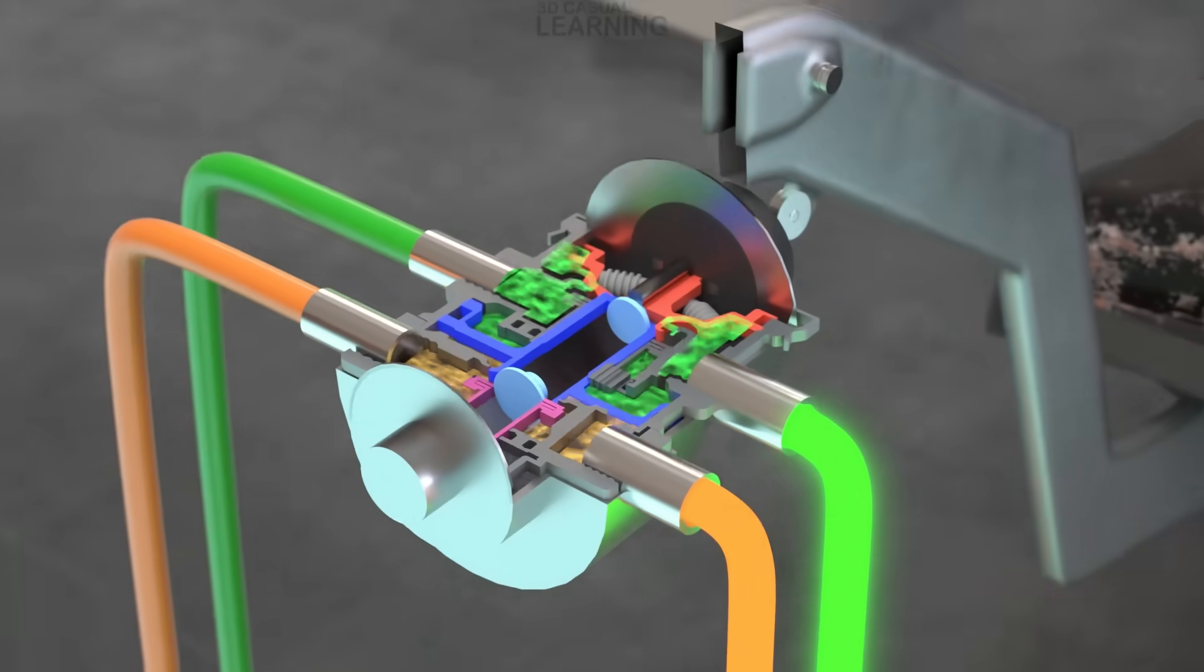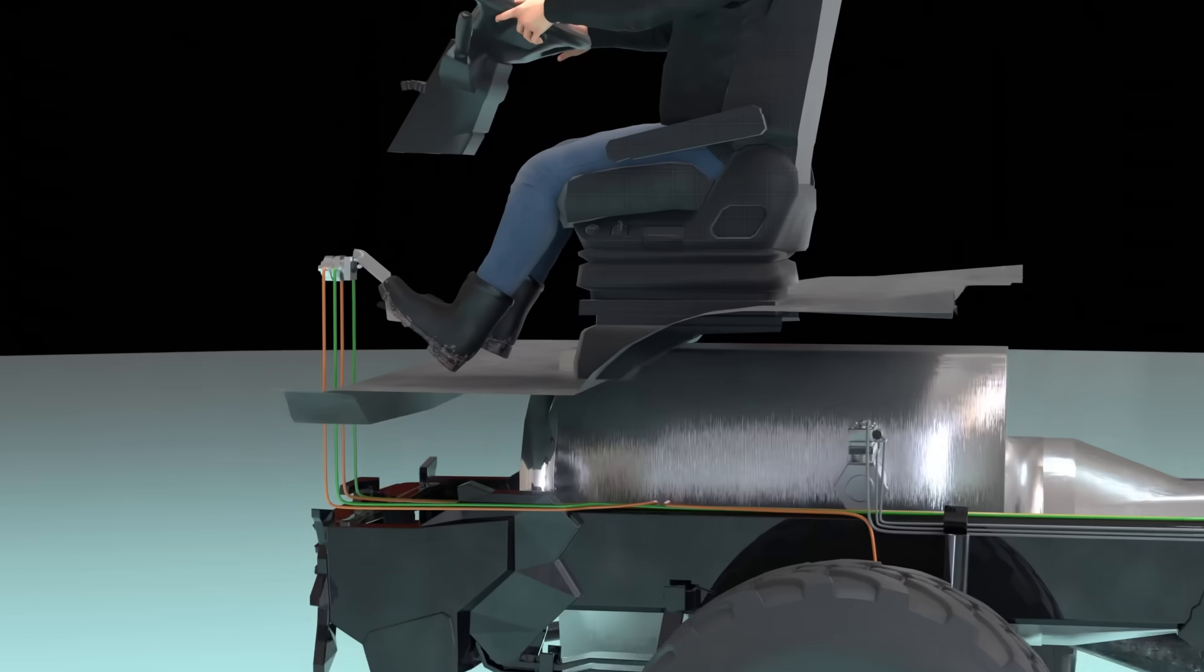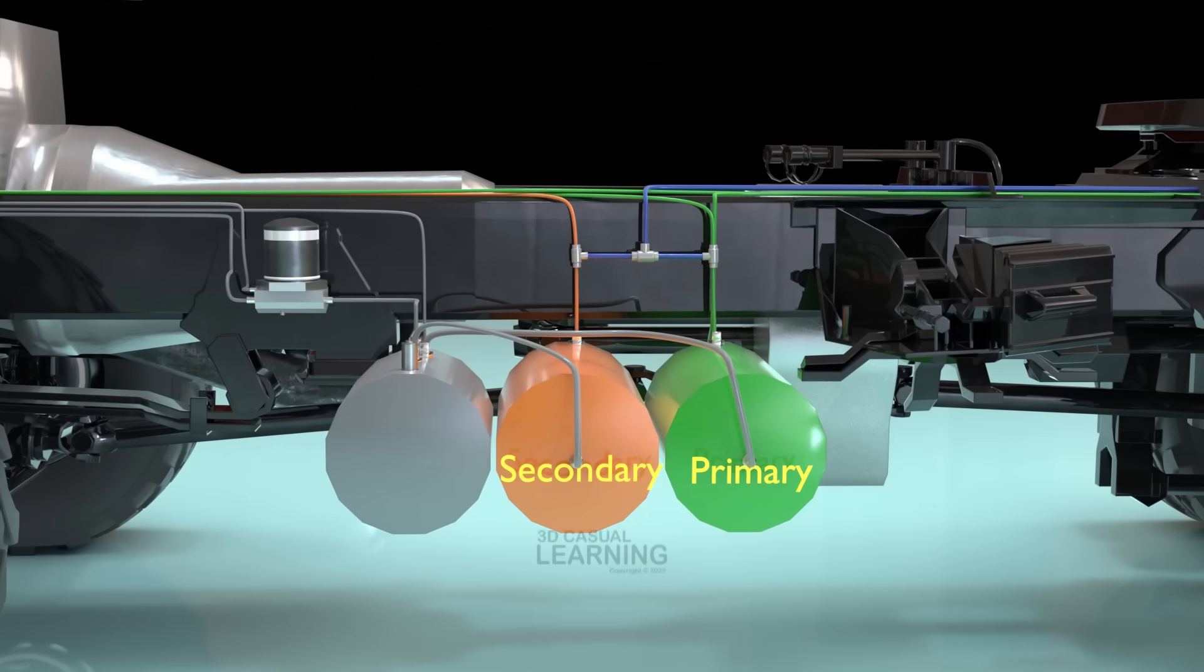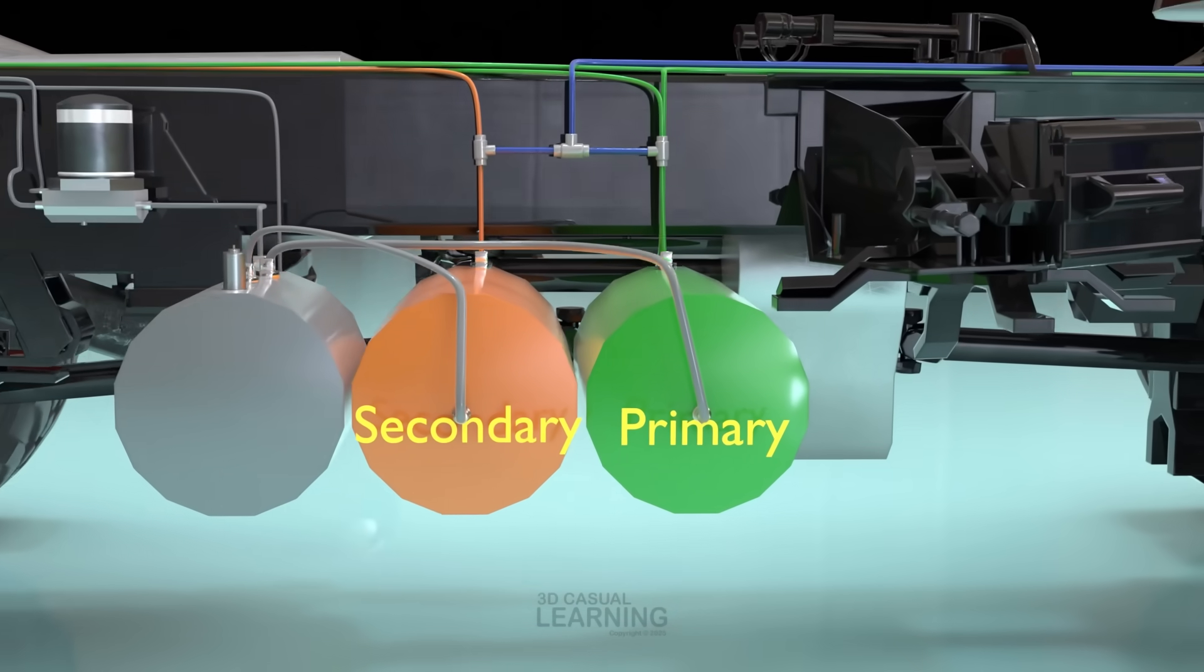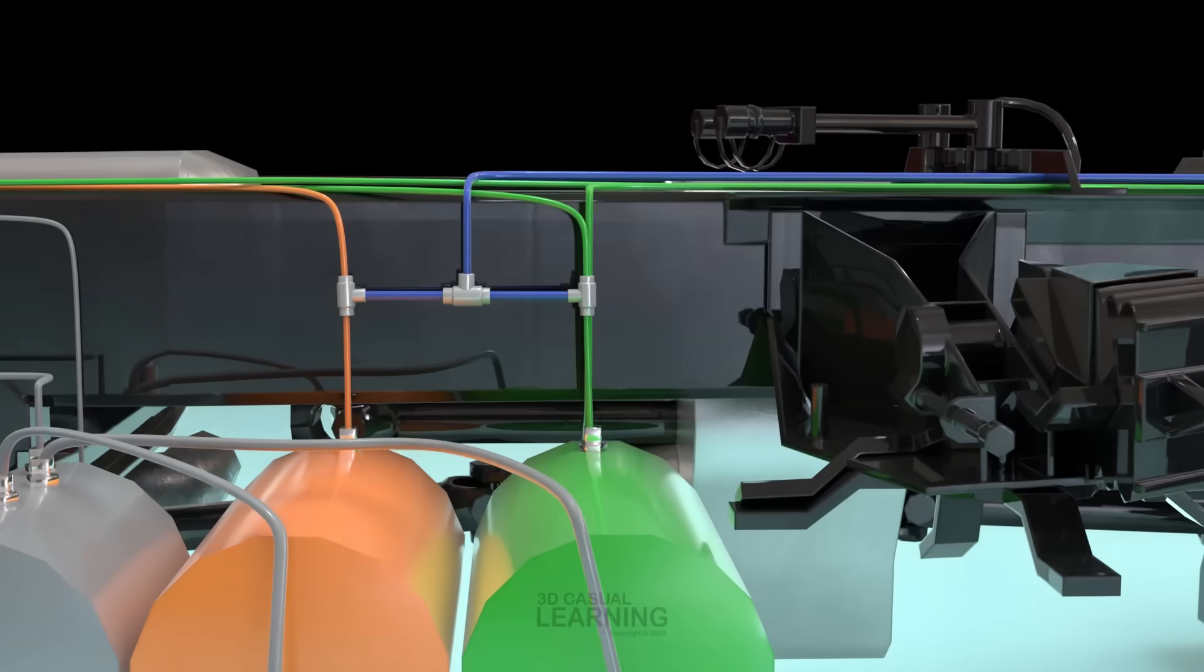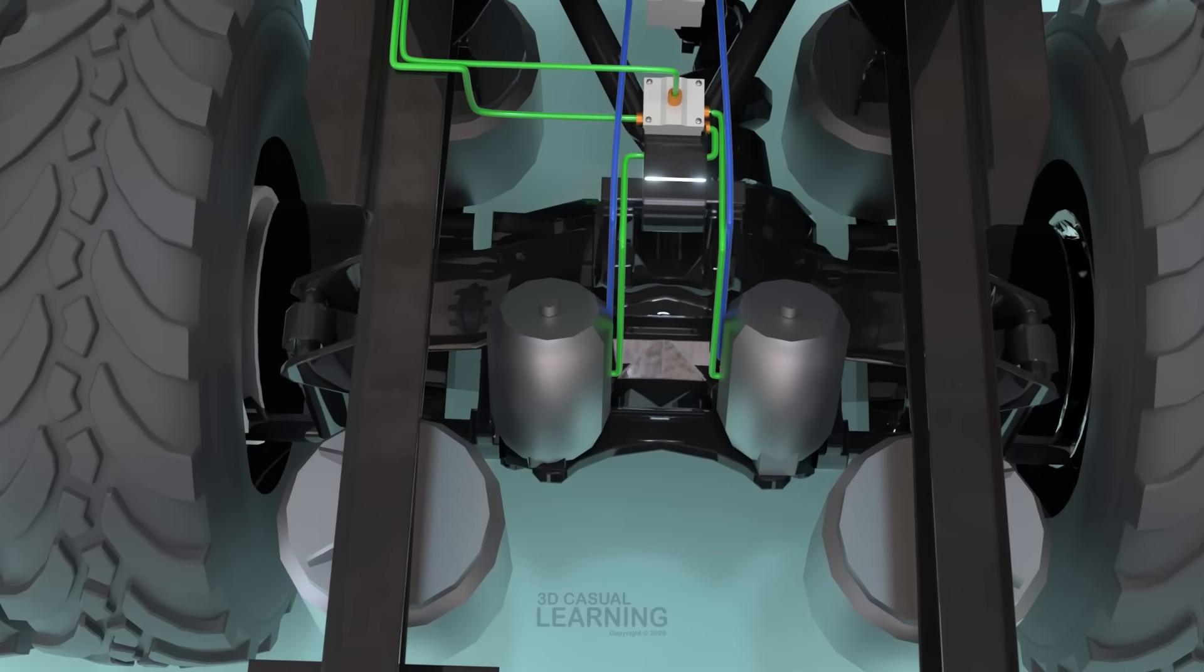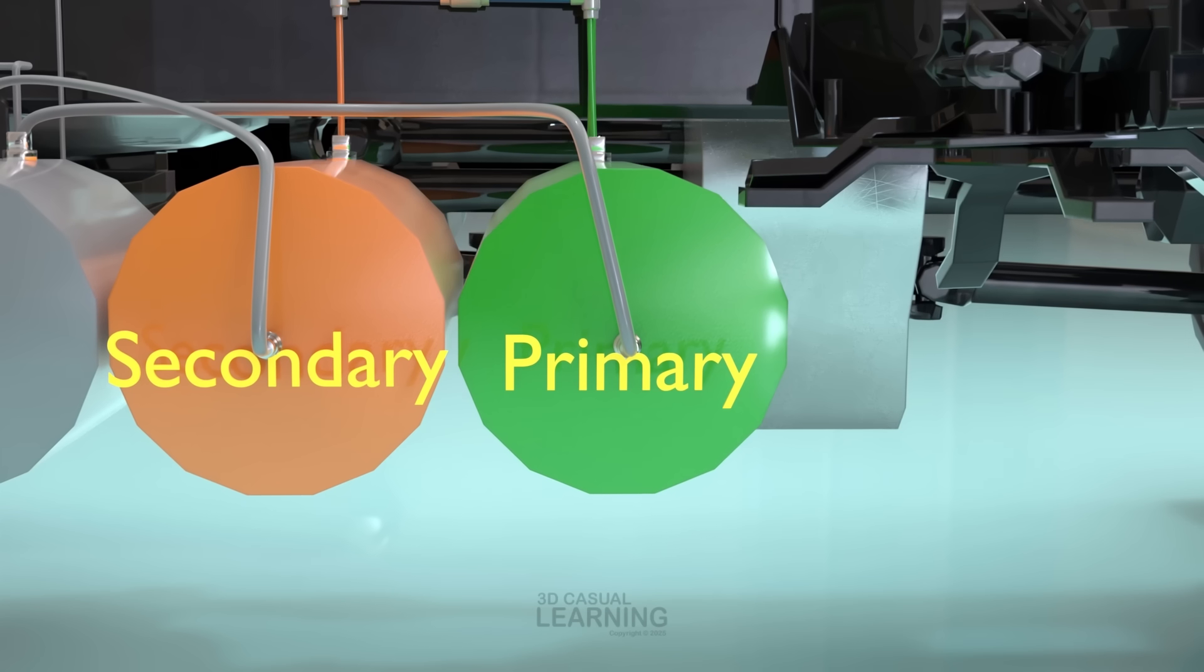Now let's explore where the air from the brake valve goes, and how it activates different parts of the truck's braking system. Most manufacturers configure the braking system using a front-rear axle split. The primary circuit, shown in green, controls the rear axle service brakes and the spring brake service portion. The secondary circuit, shown in orange, operates the front axle service brakes.